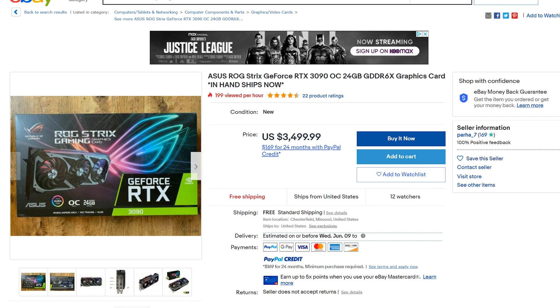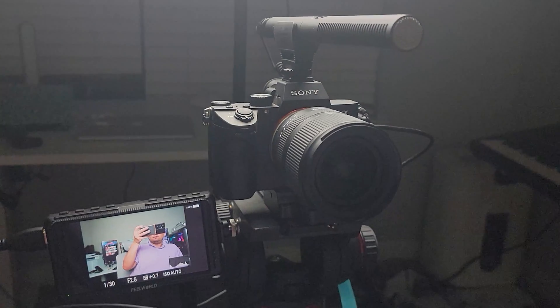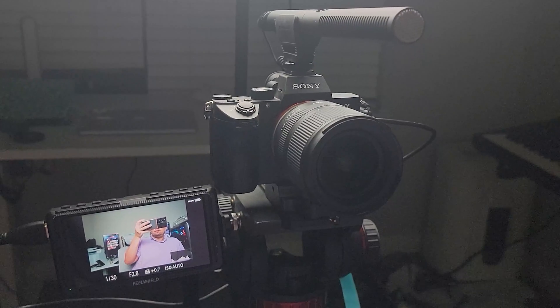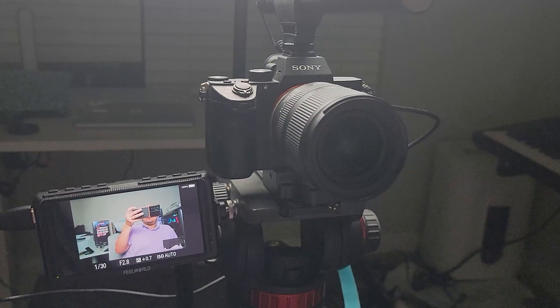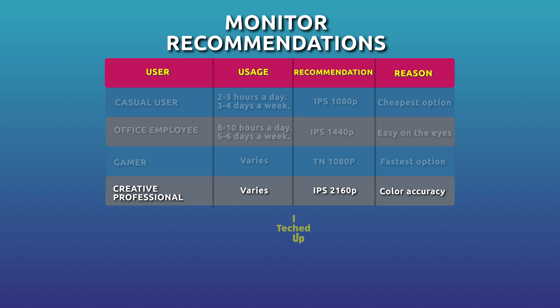The last user type is a creative professional — someone like myself, a video creator who spends a lot of time doing creative work. I shoot all my content on the Sony A7 III and all my videos are 4K resolution. I recommend an IPS 2160p or 4K monitor, which provides the highest resolution to help with color accuracy when editing videos and photos. I'm doing a full review of the Dell 4K 32-inch monitor behind me, which I've been using for a year and a half — I'll add the link when that video is ready.